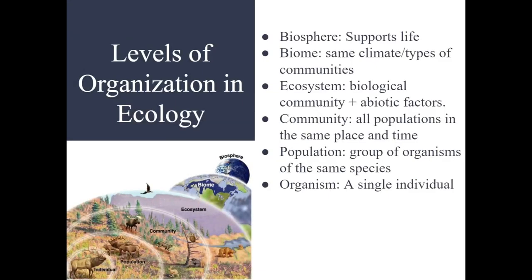There are seven levels of organization in ecology, but we're only going to take six of them because we're not going down to the cellular level. We start from the individual, and a group of individuals forms a population. A group of different populations interacting with each other forms a community, and the community takes place in an ecosystem. Community only consists of living things, while the ecosystem is a community and how it interacts with the non-living parts of its region. A group of similar ecosystems with the same general conditions — such as temperature and community — is a biome, and the biosphere is all the biomes on Earth.